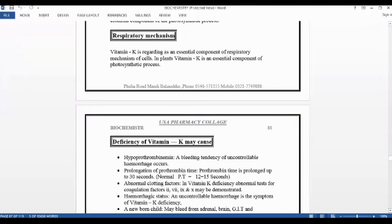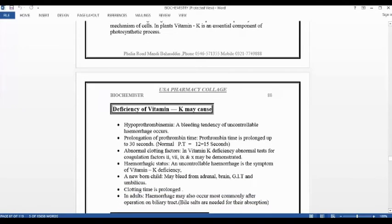Next, there is deficiency of vitamin K. What can happen if there is a deficiency of vitamin K? That means hypoprothombinemia. The reason is that the blood clotting factors are not activated. The function of the factors are not active. So there will be bleeding tendency of uncontrollable hemorrhage.